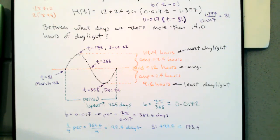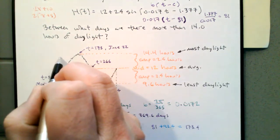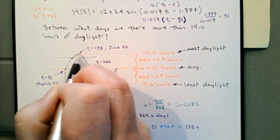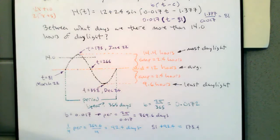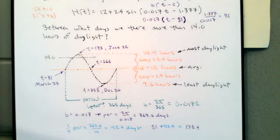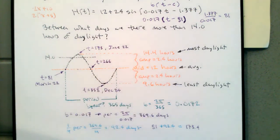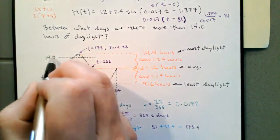Now let's look at the actual problem: between what days are there more than 14 hours of daylight? With our sketch, we can see the 14-hour line cuts off a piece near the maximum. We're looking for two values sometime in summer. Mechanically, we'll solve a trigonometric equation using sine inverse, finding the reference angle and placing it in quadrants one and two — because sine is positive there.